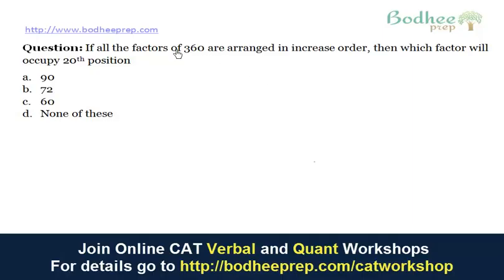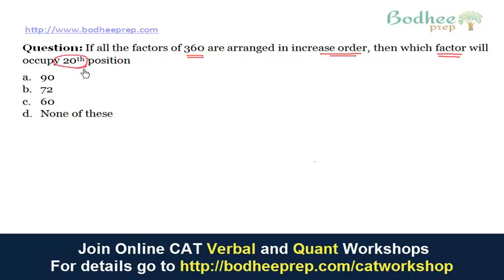The question is that all the factors of 360 are arranged in increasing order and we have to find the factor which will occupy the 20th position. From the question it is clear that 360 will have 20 or more than 20 factors.